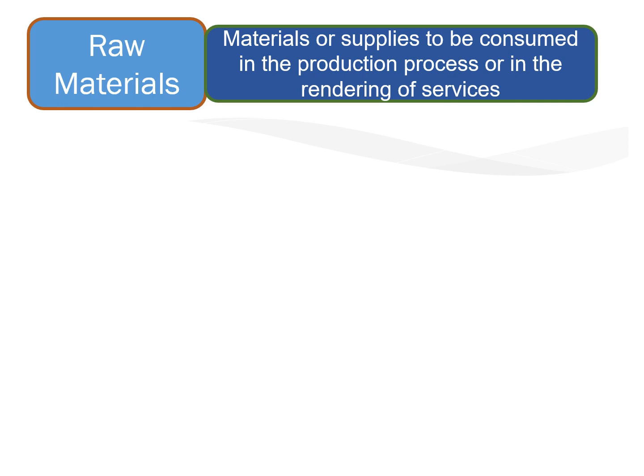Raw materials are materials or supplies to be consumed in production or in rendering services. They are the basic things essential to produce the end product or finished product. For example, in a YouTube channel, while we are still preparing slides and content, those are the raw materials. However, a YouTube channel doesn't usually have inventory because what we are catering is services — meaning our talents.